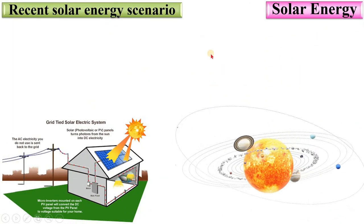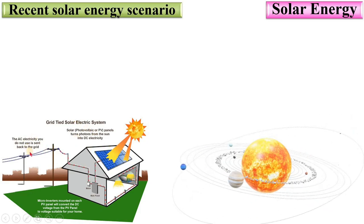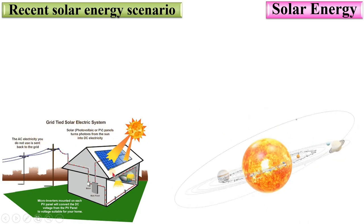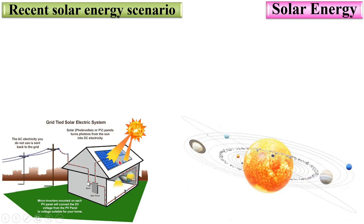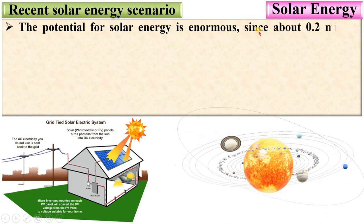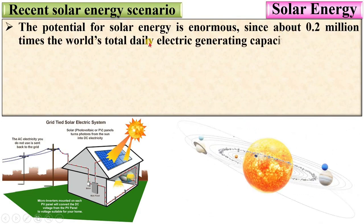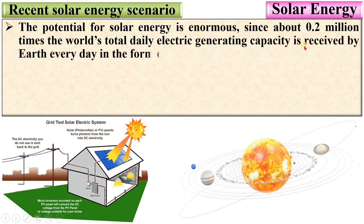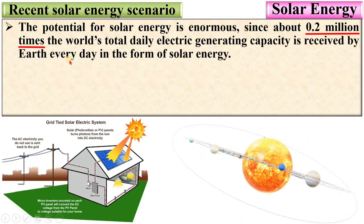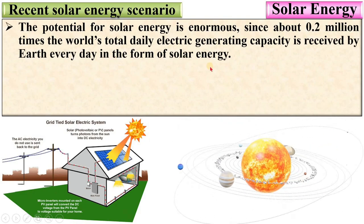The recent solar energy scenario. In this figure, you can see the recent trend of solar energy utilization at the domestic application. The potential for solar energy is enormous, since about 0.2 million times the world's total daily electric generating capacity is received by the earth every day in the form of solar energy.